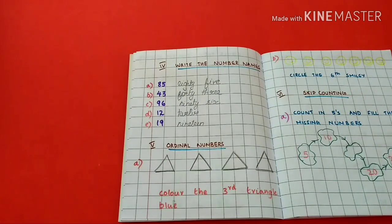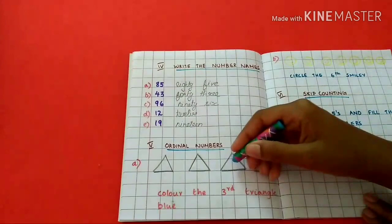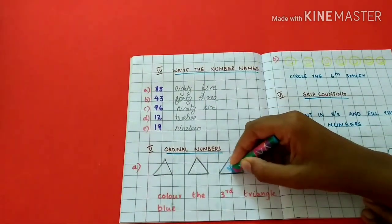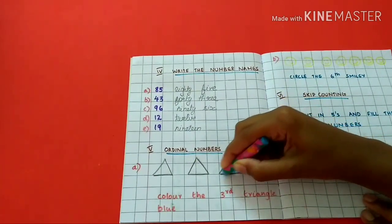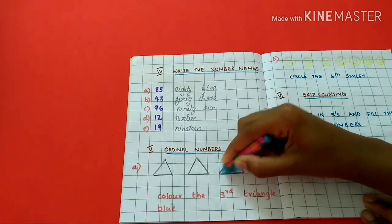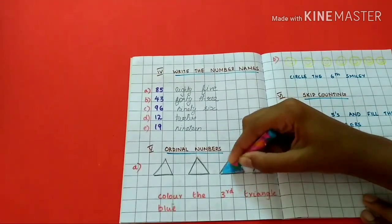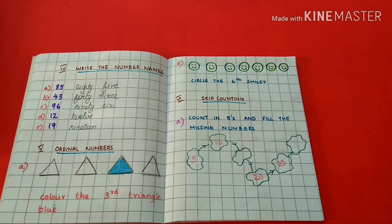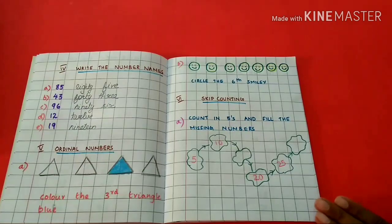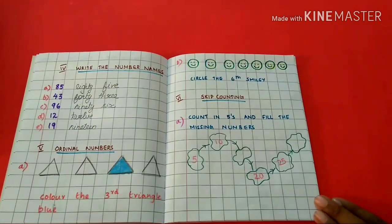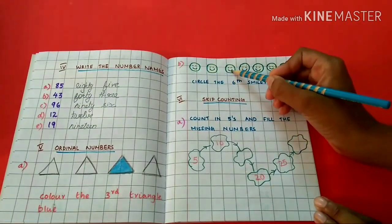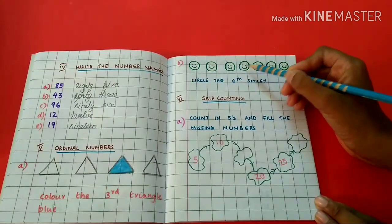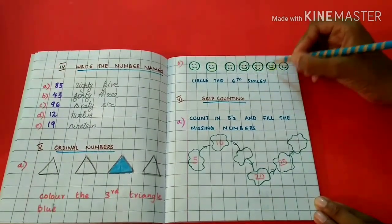Color the third triangle blue. Circle the sixth smiley: 1, 2, 3, 4, 5, 6.